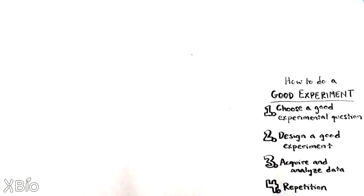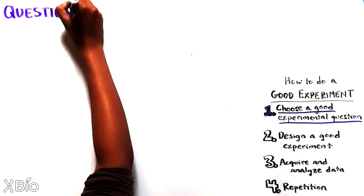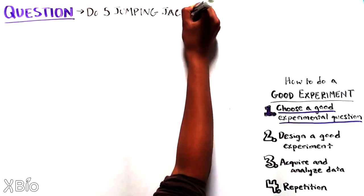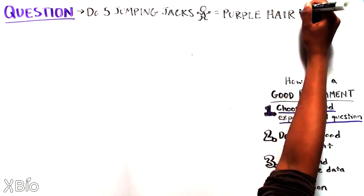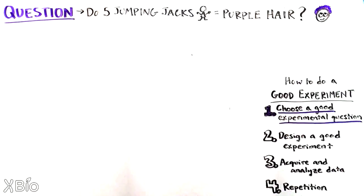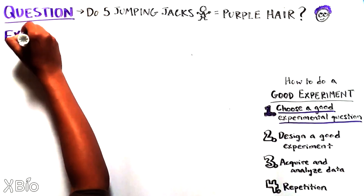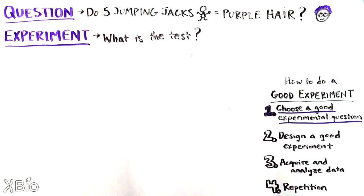The important first step is to choose a particular question we're eager to answer. Let's pick a totally crazy question. If people do five jumping jacks as soon as they get out of bed in the morning, will their hair turn purple? There are a few key things we must think about. First, we need to clarify how we plan to test the question.